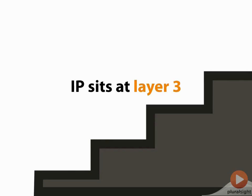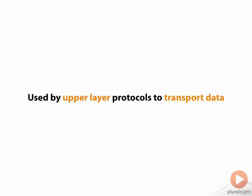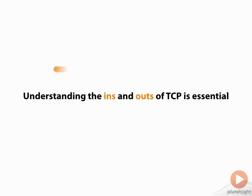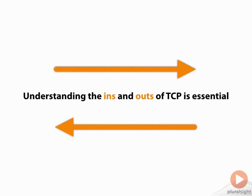IP sits at layer three of the OSI model, and so this should be review for you. You should already understand that, and it's used by upper layer protocols to transport their data. Understanding the ins and outs of IP as well as TCP is essential.